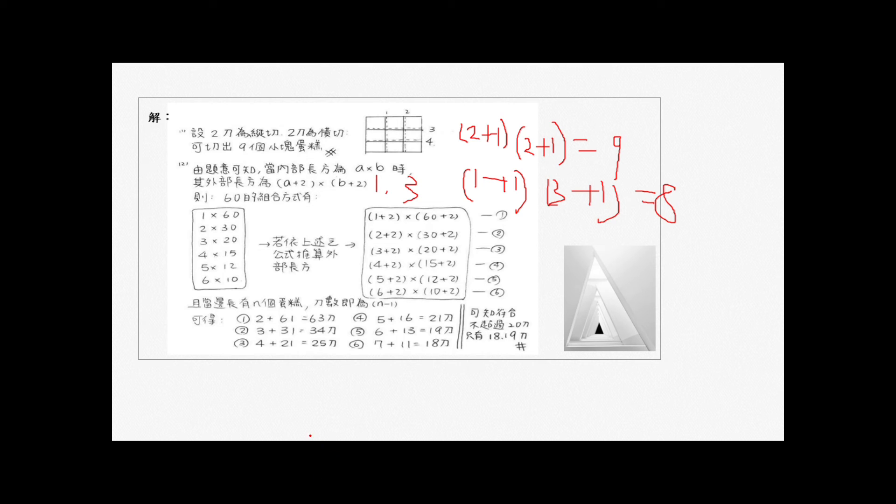第二小题:他说要制作出60个所有侧面都不焦脆的小块蛋糕,而且不超过二十刀的情况下,请问凯特需要切几刀才能达成这个需求。那这基本上考因数倍数的概念。60的因数就是多少乘以多少会等于60呢?就是一乘以60、二乘以30、三乘以20、四乘以15、五乘以12、六乘以10。